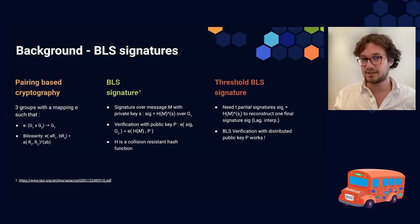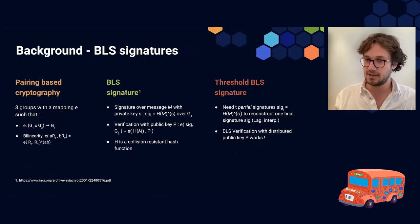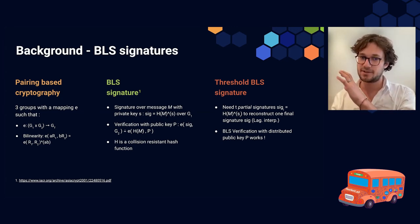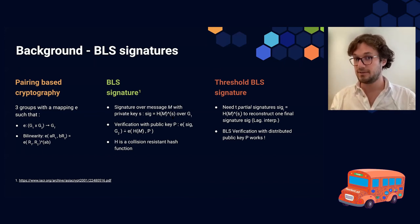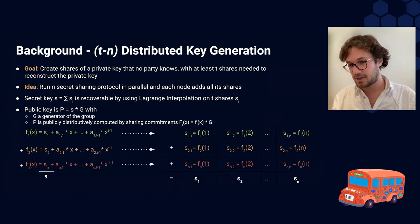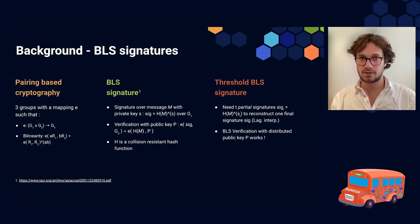We can use BLS signatures in the threshold setting: instead of signing with the secret key, each participant signs with their secret share from the DKG. So if I am the first node, I use S1. We get T partial signatures, and once we have T of them, we use Lagrange interpolation again to reconstruct the final signature H(M)^S. We can verify this final signature with the distributed public key — it is the same as if we had signed directly with S. That's the core of the techniques used in DRAND.